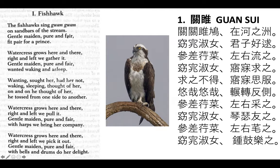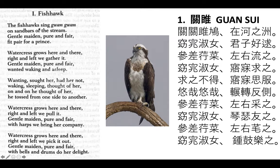The feelings I get here are how gentle and harmonious the scene is. It seems like things have been happening this way at this site for a long time. Watercress grows here and there — all this repetition implies that these people's days are probably very similar. They go down to the stream and pick the watercress: right and left we gather it, right and left we pull it, right and left we pick it out. So there's a sense of maybe monotony, but also order — they know what their lives are going to be like every day.